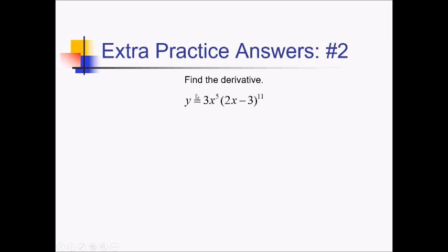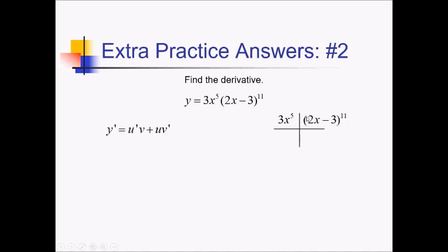On this problem, I'm trying to find the derivative of this function. For that, I will use the product rule, so u'v plus uv', and we'll use the box and ribbon to sort things out. I've got my factor of 3x to the 5th, and also in the other box, 2x minus 3 quantity to the 11th. Now I need the derivatives of these. This first one's pretty straightforward, just using our power rule: 15x to the 4th.